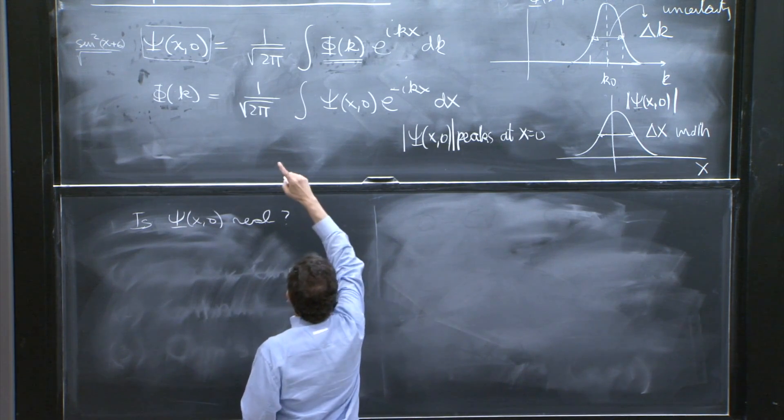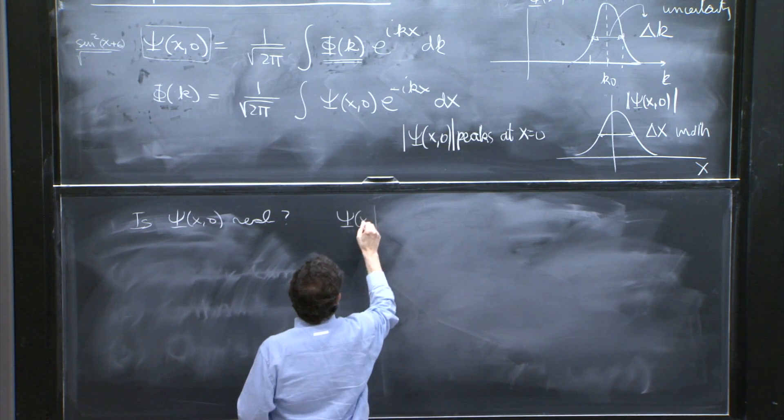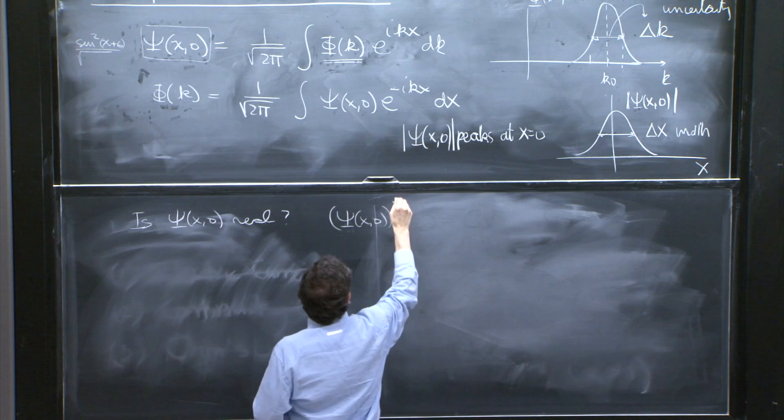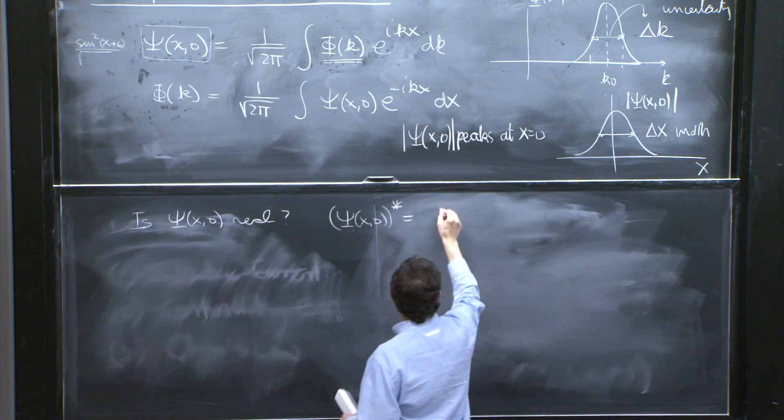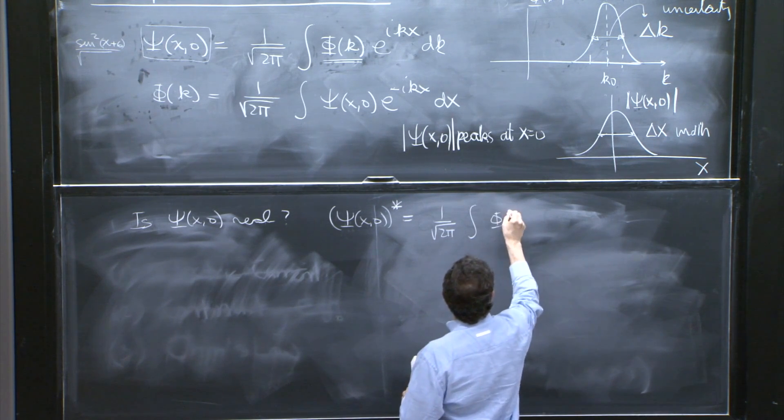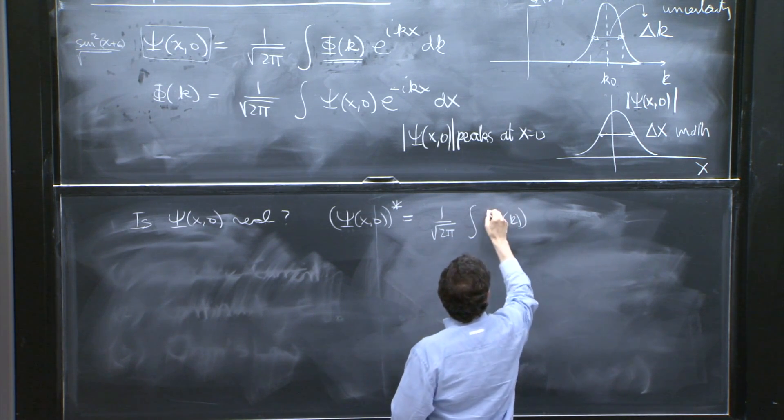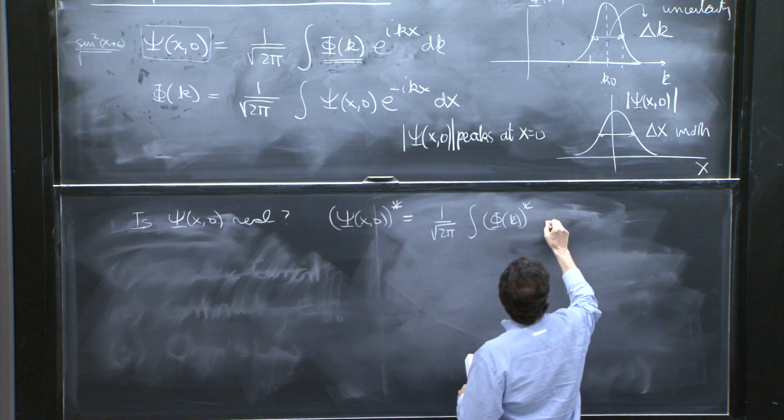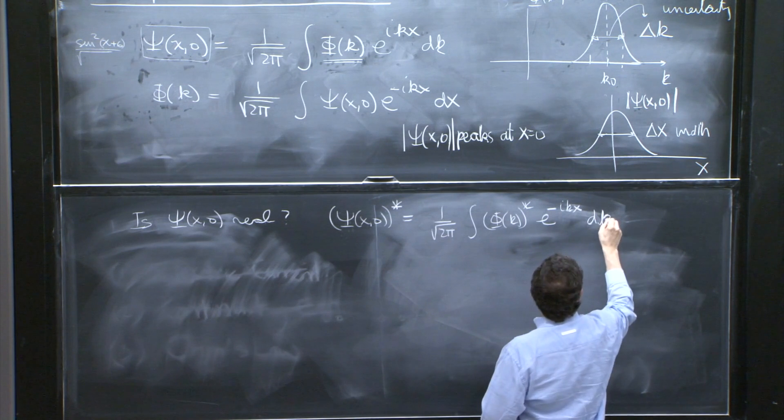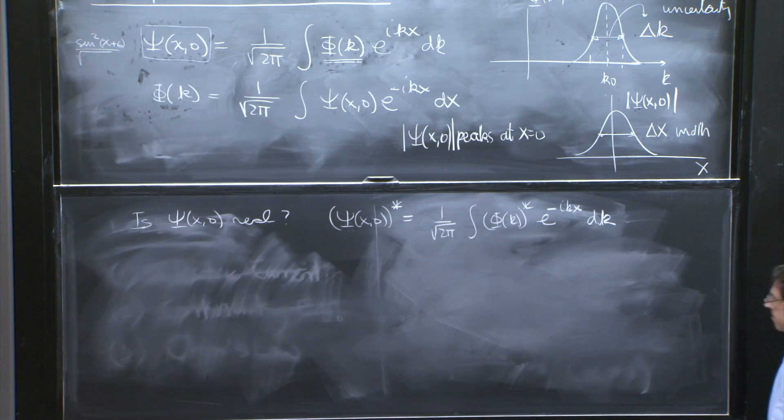So let's just say, suppose psi is given by that. Then psi x0 star, the complex conjugate, would be 1 over square root of 2 pi integral phi of k star, e to the minus ikx dk. I conjugated everything in that equation for psi of x and 0.